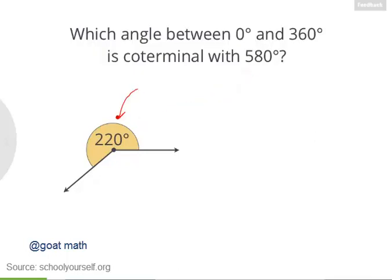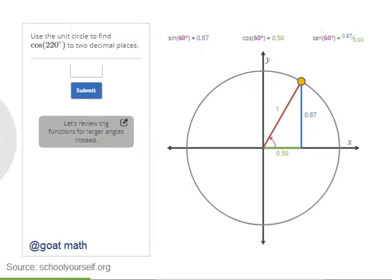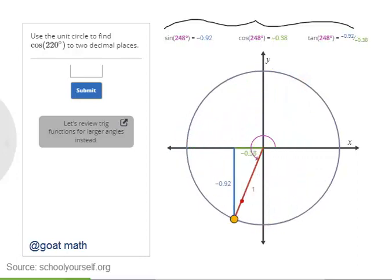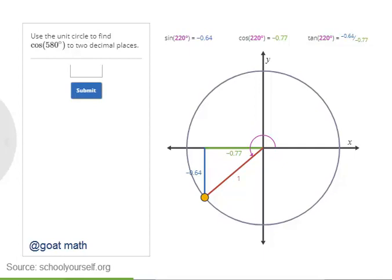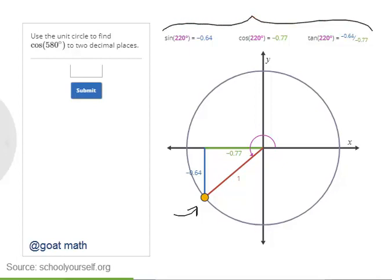With this interactive graph, you can see the sine, cosine, and tangent of all angles between 0 and 360 degrees by dragging this point around the circumference of the unit circle. Try using this interactive to find the cosine of 220 degrees to two decimal places. And if you're feeling lost, click over here to review what the unit circle is all about. The cosine of 220 degrees is the x-coordinate over here, which is approximately negative 0.77. You can use the x and y coordinates on the unit circle to evaluate the sine, cosine, and tangent of any angle between 0 and 360 degrees.